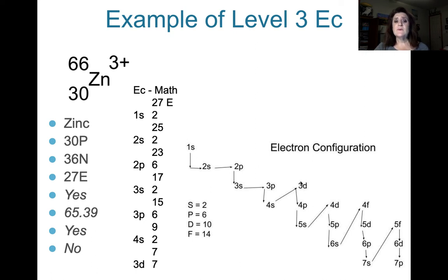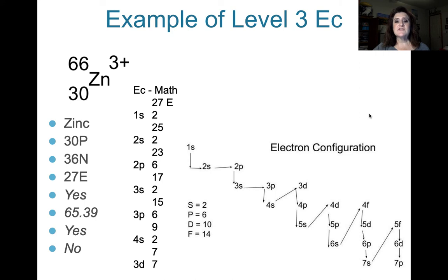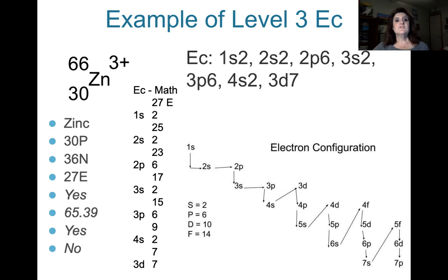Now the electron configuration is not that. That's the electron configuration math. The electron configuration is actually hidden inside that. And it is the level, the shell, the sublevel, and then how many people or electrons are there. So the actual electron configuration is 1s2, 2s2, 2p6, 3s2, 3p6, 4s2, 3d7.